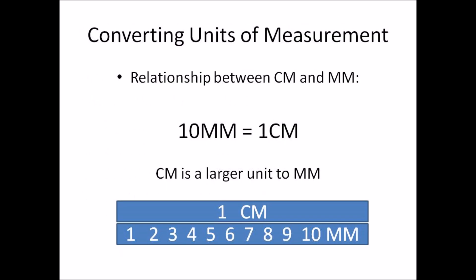We'll go back to look at the relationship between centimeters and millimeters again. As you might remember, 10 mm equals 1 cm. Millimeters is a smaller unit compared to centimeters, and vice versa — centimeters is a larger unit compared to millimeters. In this part of the video, we'll learn how to convert centimeters to millimeters.